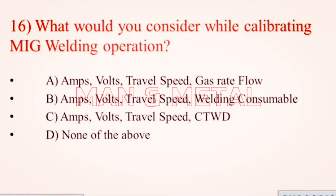Question 16: What would you consider while calibrating a MIG welding operation? a) Amps, volts, travel speed, gas flow rate; b) amps, volts, travel speed, welding consumable; c) amps, volts, travel speed, CTWD; d) none of the above.